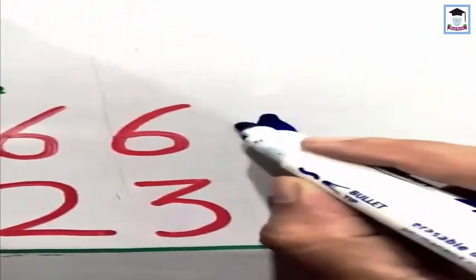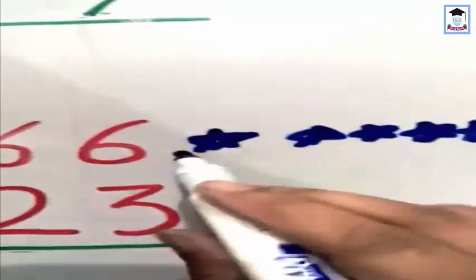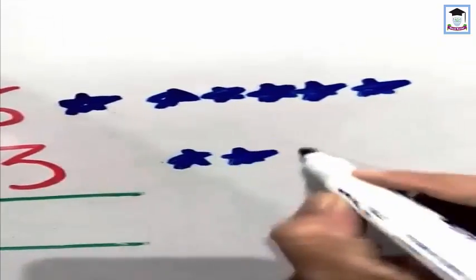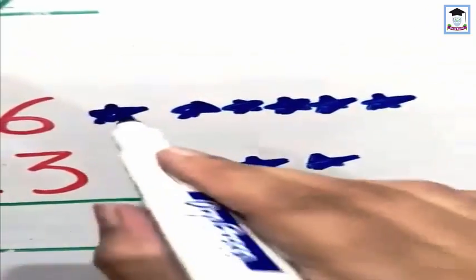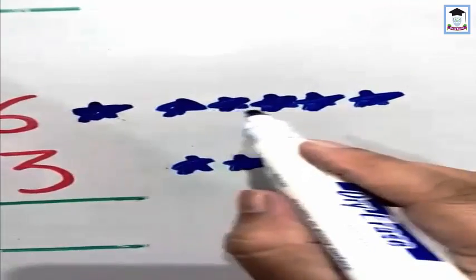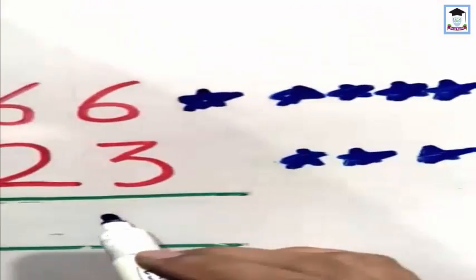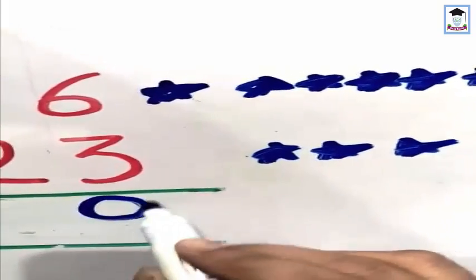Next question is 6 plus 3. There are six stars — one, two, three, four, five, six. How many stars? Six. Now three more — one, two, three. We will count: one, two, three, four, five, six, seven, eight, nine. Six plus three makes nine.